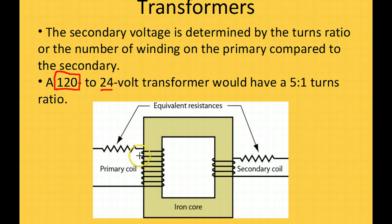If we have one coil of wire on the secondary side for every five coils on the primary side, it's going to divide the voltage by five. That's called a step-down transformer.